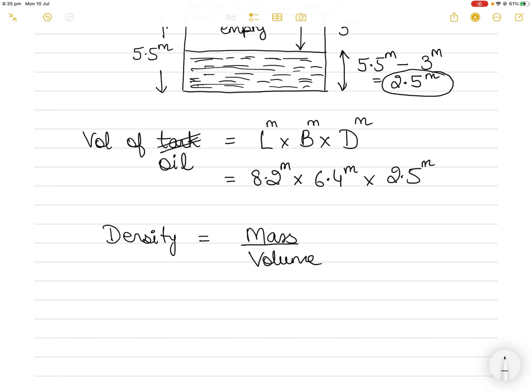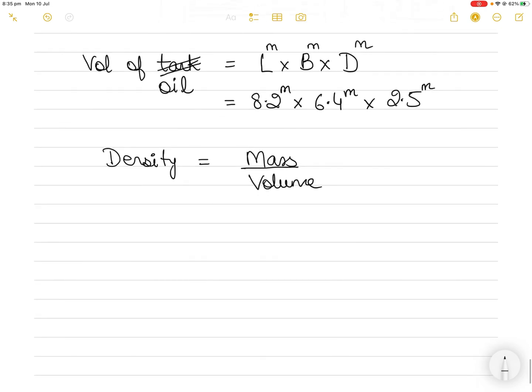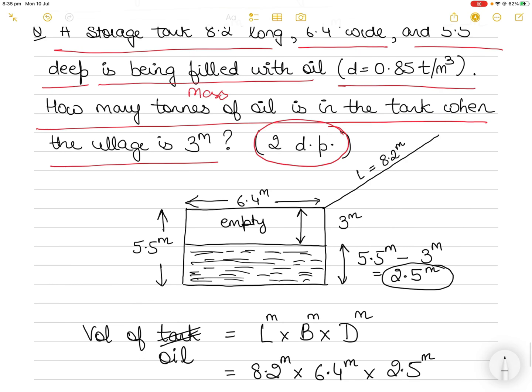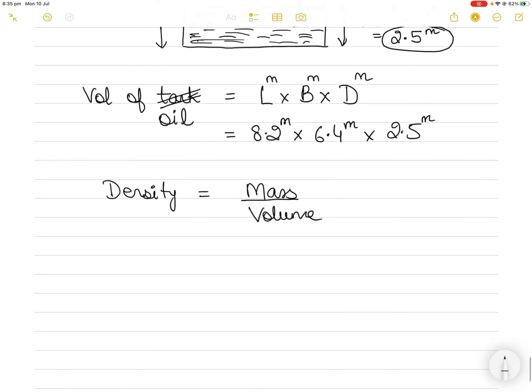Or you can say volume of tank available for loading. It's the same thing. So here density equals mass by volume. Is the density of the oil given to us? Yes it is. It is 0.85 ton per metric cube.